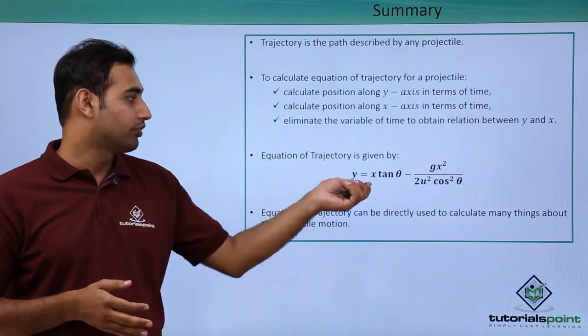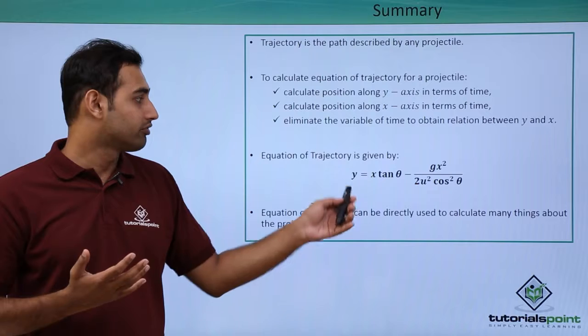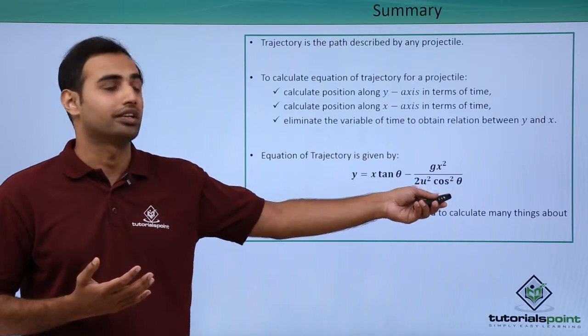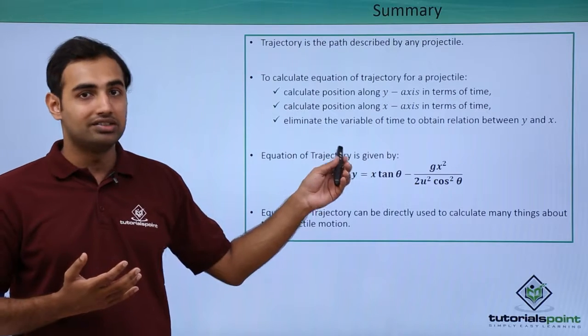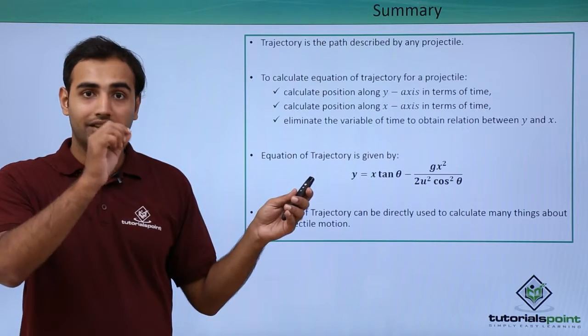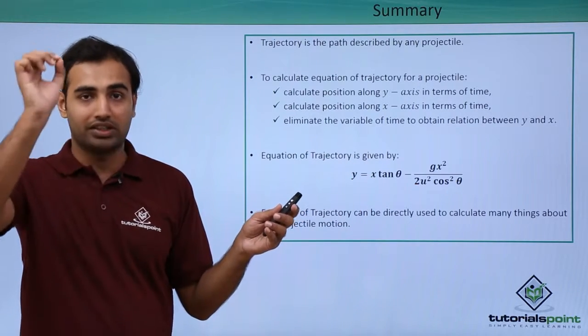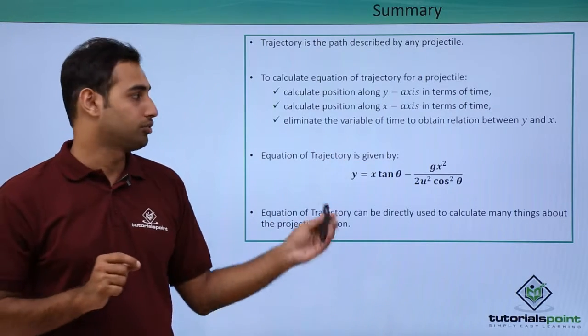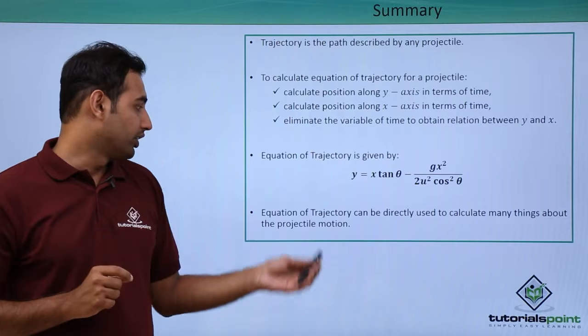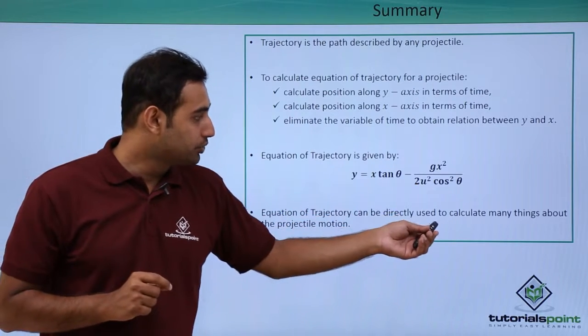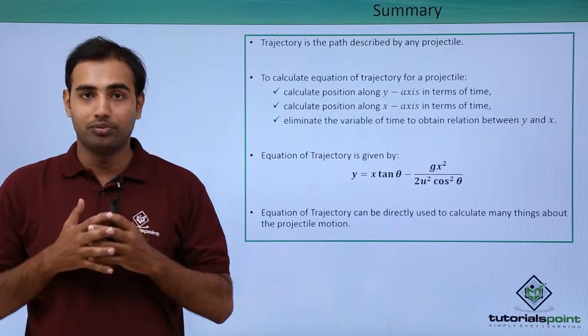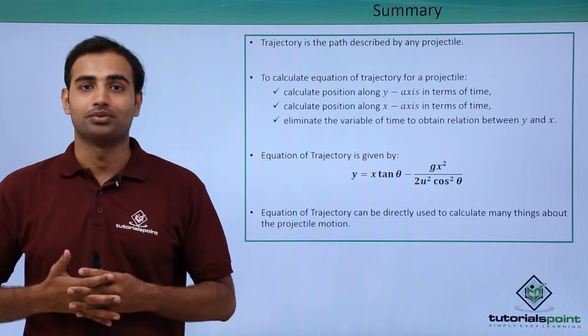Like here we obtain in case of equation of trajectory, which clearly is y is equal to x tan theta minus gx square upon 2u square cos square theta. So here there is no time, this simply talks about when the x position of the projectile is some value, then y position is essentially tied to that x value through this relationship. Now equation of trajectory can be directly used to calculate many things about the projectile motion as we saw in the previous slide. So I hope you enjoyed the video. Thank you.